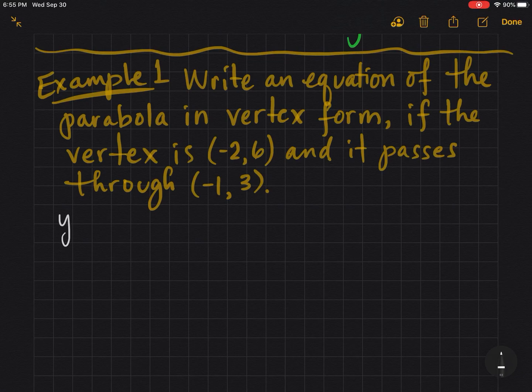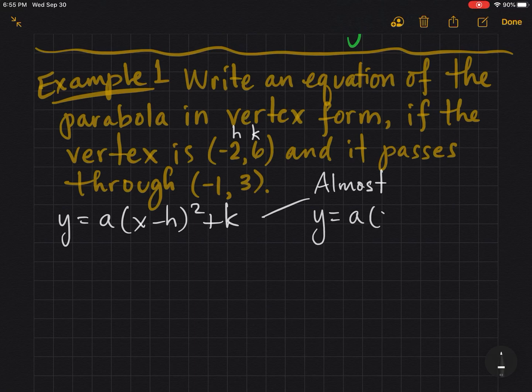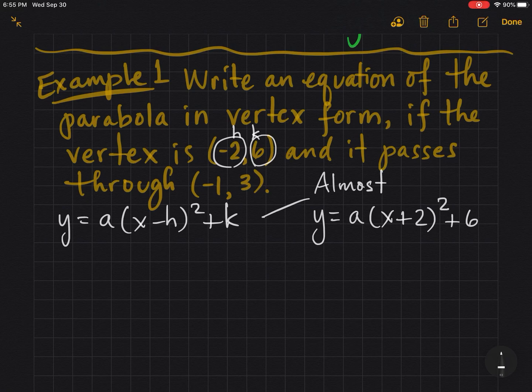We're almost done because we know the vertex. So this is our h, k. So y = a(x + 2)² + 6. Remember you go opposite of sign here. Really the only thing we need is a.